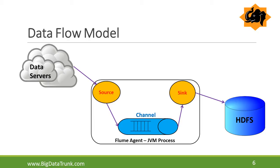An event is a single unit of data flow, typically a single log entry of approximately 4KB in size. The source is the place where a node gets its data stream. A channel is a mechanism by which Flume agents transfer events from their source to their sinks. A sink delivers the data to the destination — for example, an HDFS sink that writes events to HDFS.